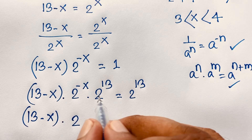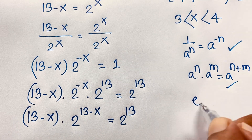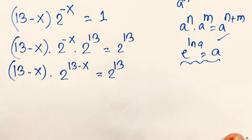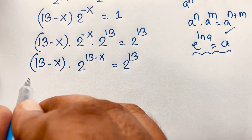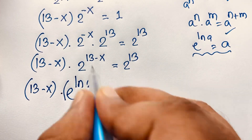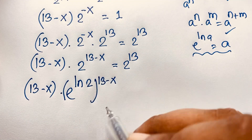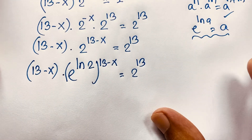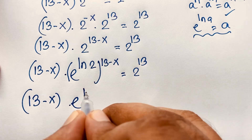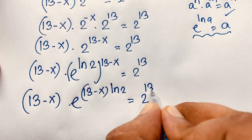Combining the exponents — since the base is the same — it will be 13 minus x times 2 to the power 13 minus x equals 2 to the power 13. I also know that e to the power ln a equals a, so I apply this formula here. Therefore, 13 minus x times e to the power ln 2, all raised to the power 13 minus x, is equal to 2 to the power 13. This times this gives us 13 minus x times ln 2 equals 2 to the power 13.